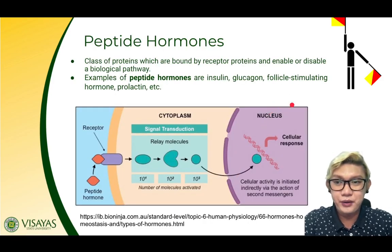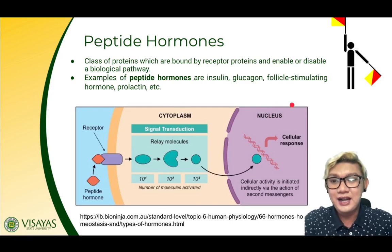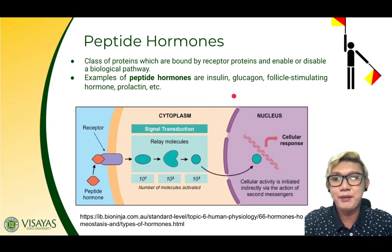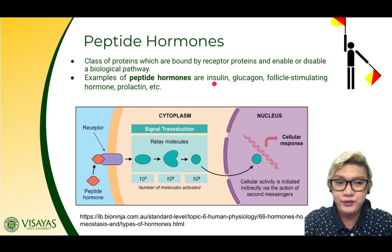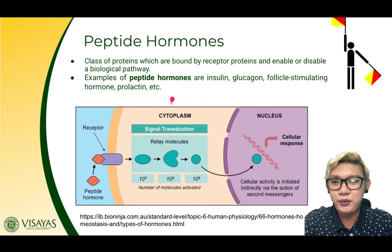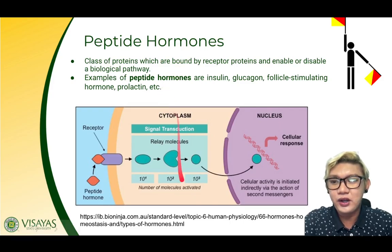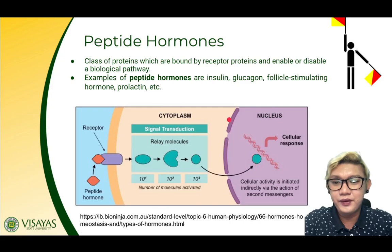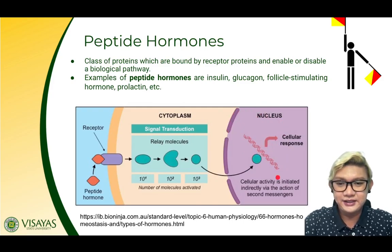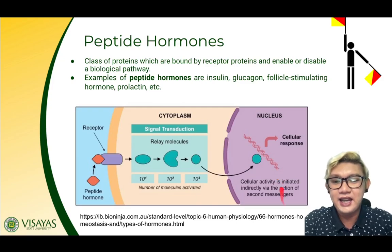There are also hormones that are made up of proteins — these are called peptide hormones. These are a class of proteins which are bound by receptor proteins and enable or disable a biological pathway. Examples of peptide hormones are insulin, which regulates sugar in the blood; glucagon; follicle-stimulating hormone, which controls production of egg cells; and prolactin, which stimulates production of milk in mammary glands. There are specific proteins for peptide hormones that stimulate specific responses, and they act upon the DNA in the target cells. Cellular activity is initiated indirectly by the action of second messengers.